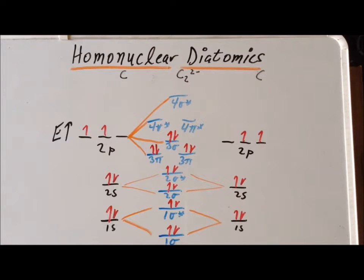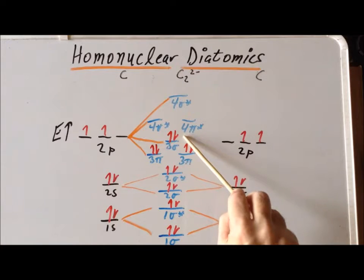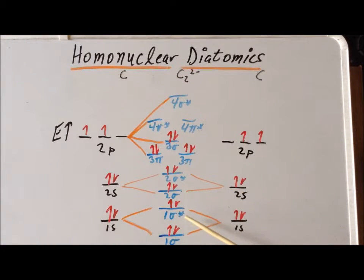So for this, what is the bond order of acetylide? Well, we notice that we have two, four, six, eight, ten bonding electrons. We have a total of two, four, antibonding electrons. Ten minus four equals six.